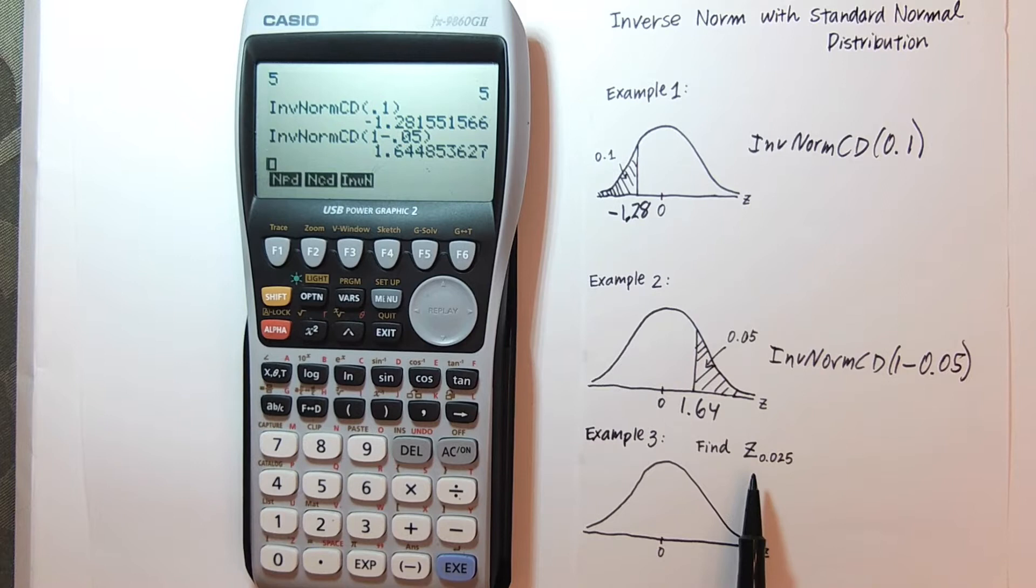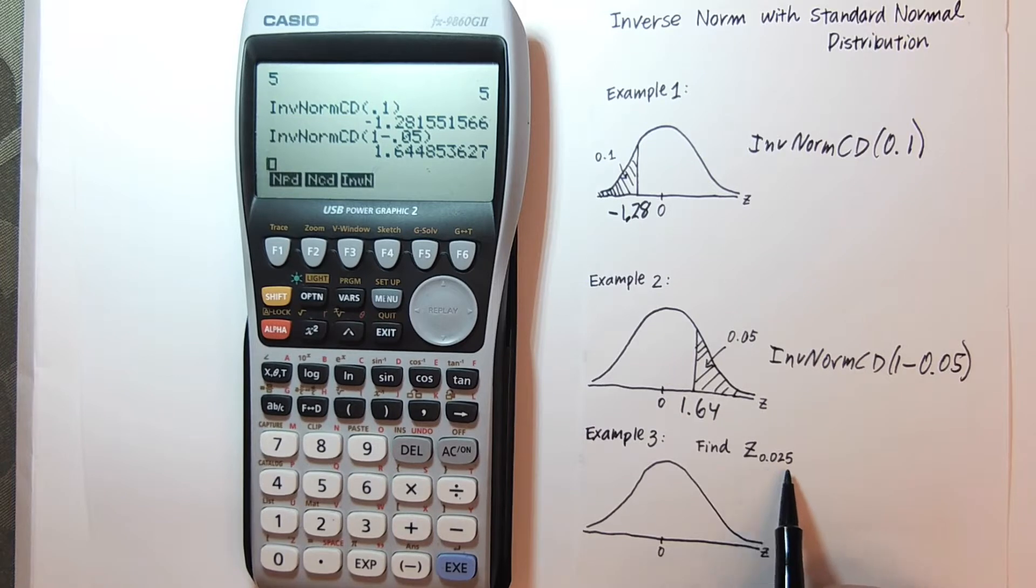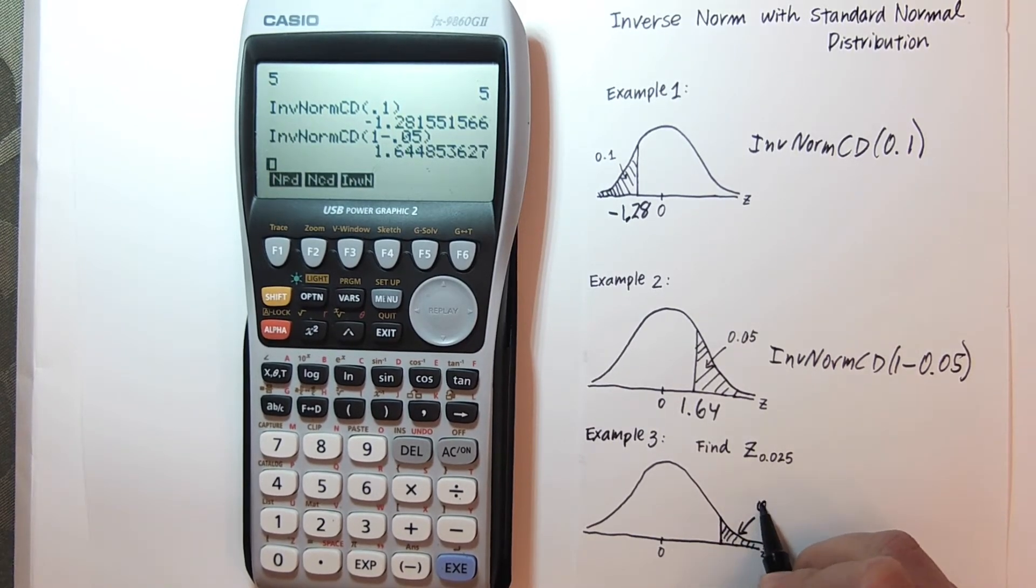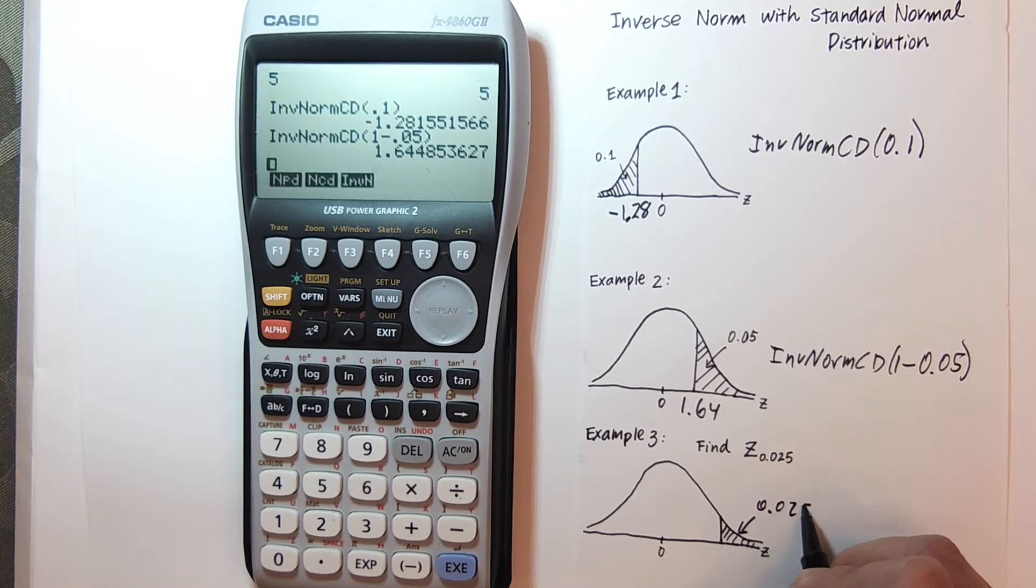Now here we have a Z sub alpha over 2. And with the Z sub alpha over 2, I have an area, but this area is always going to be the area to the right. So this area here is 0.025.